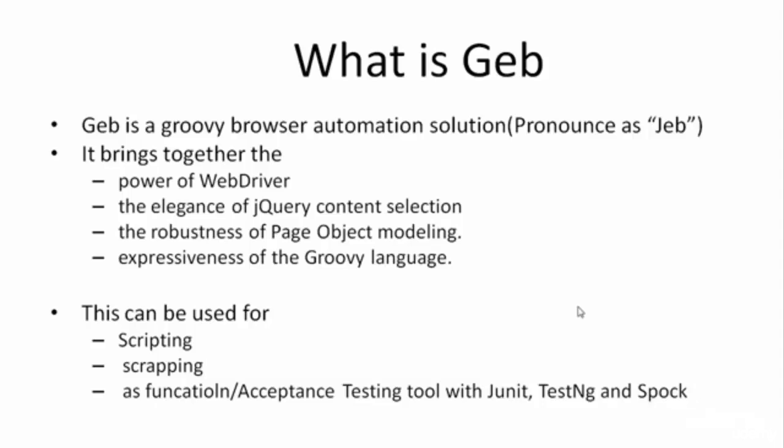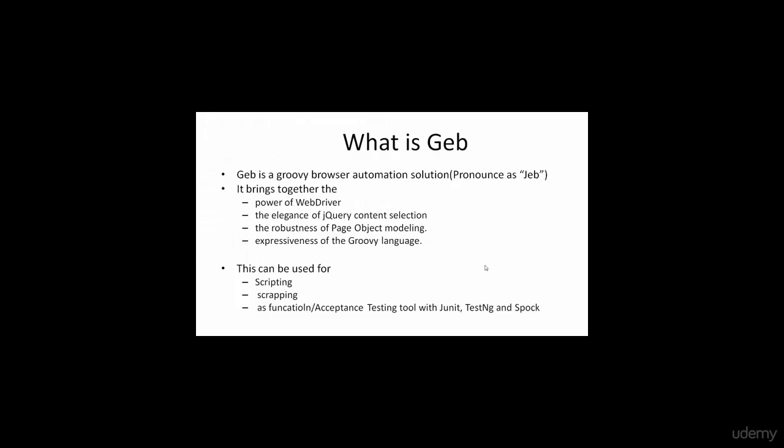Since JAP is a Groovy browser automation solution, it has been written using Groovy. Since Groovy is a JVM language, some of its libraries have been written in Java. In general, Groovy is going to be our primary scripting language in JAP, and Groovy is known for its expressiveness because code written in Groovy looks more like English, making all our scripts quite readable and easy to understand.